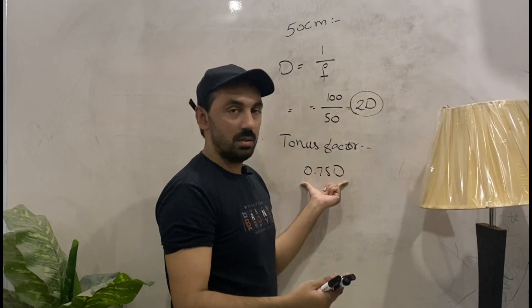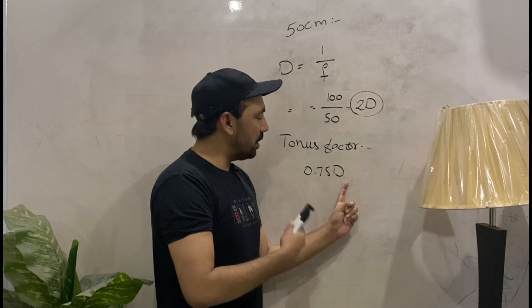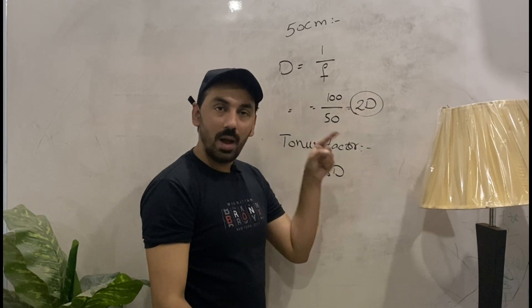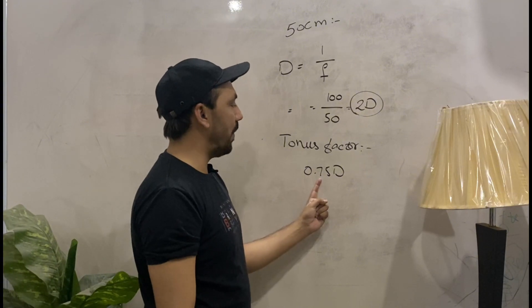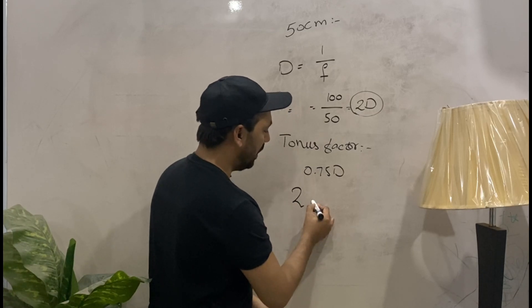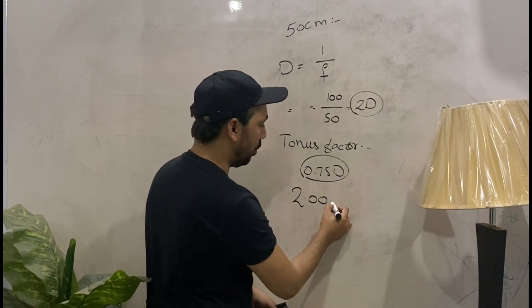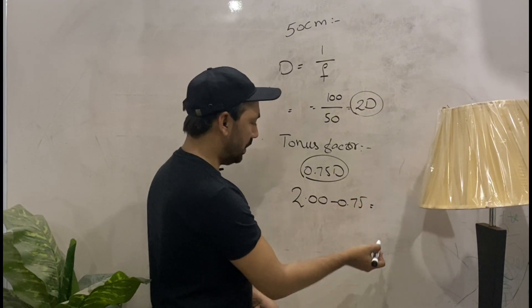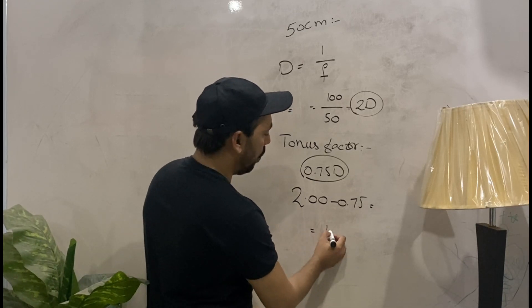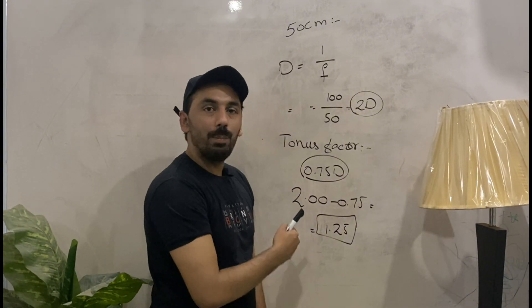You can consider 0.75 as the tonus factor or the normal lag — your choice. You deduct this tonus factor from the working distance. Our working distance is 2.00 diopters, and the tonus factor to deduct is 0.75. So 2.00 minus 0.75 equals 1.25. This 1.25 is the compensation factor. In every case of Mohindra retinoscopy, the compensation factor will be 1.25 diopters.